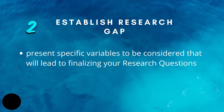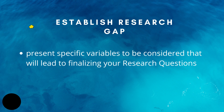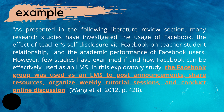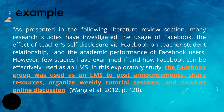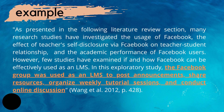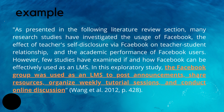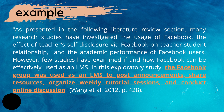The next thing you have to do to support the research gap is to present specific variables to be considered that will lead you in finalizing your research questions. These variables will help establish the identity of your paper, since these are the variables not yet considered by previous researches. For example: 'The Facebook group was used as an LMS to post announcements, share resources, organize weekly tutorial sessions, and conduct online discussion.' The new variables used are: posting announcements, sharing resources, organizing weekly tutorial sessions, and conducting online discussion.